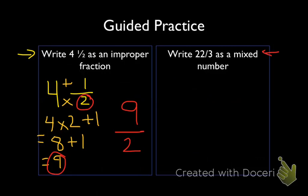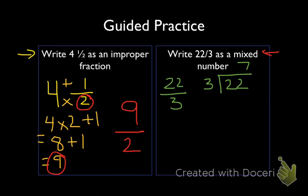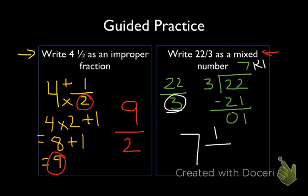Now let's solve writing 22 thirds as a mixed number. We know that 22 is the numerator and 3 is the denominator, so we'll divide the numerator by the denominator: 22 divided by 3. 3 doesn't go into 2, but 3 does go into 22 seven times, so I'll write a 7 over the ones place. 3 times 7 is 21. Subtracting, we're left with a remainder of 1. The 7 becomes our whole number, and we take our remainder, 1, and write that as a new numerator over our old denominator of 3. So 22 thirds as a mixed number is 7 and 1 third.